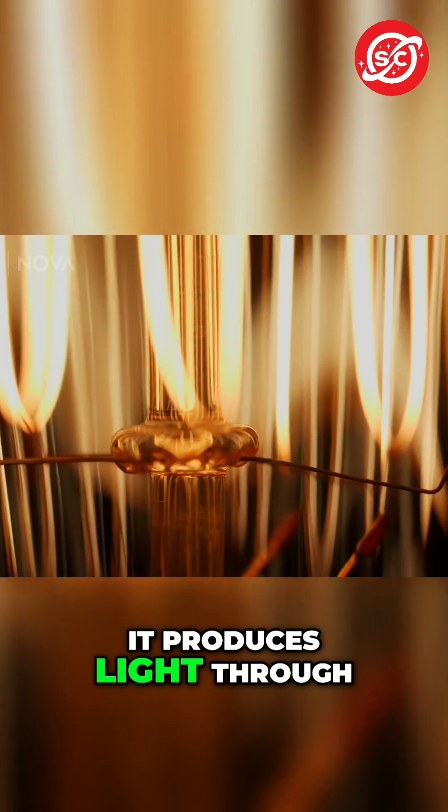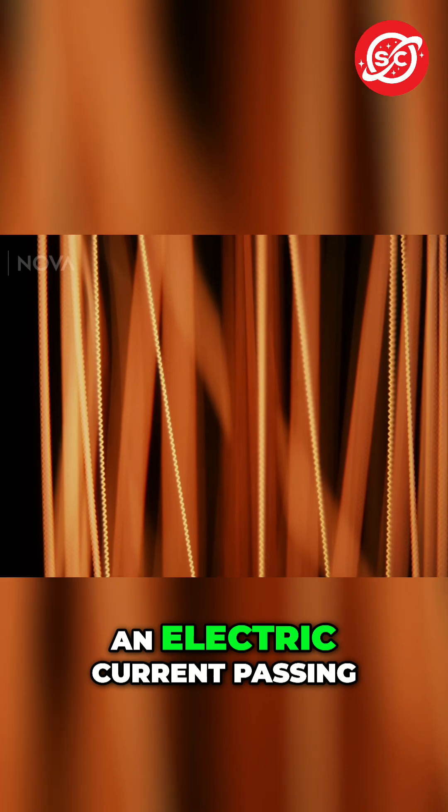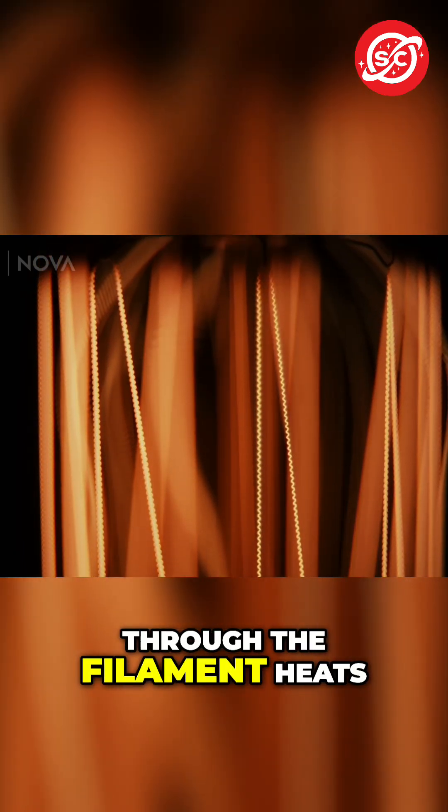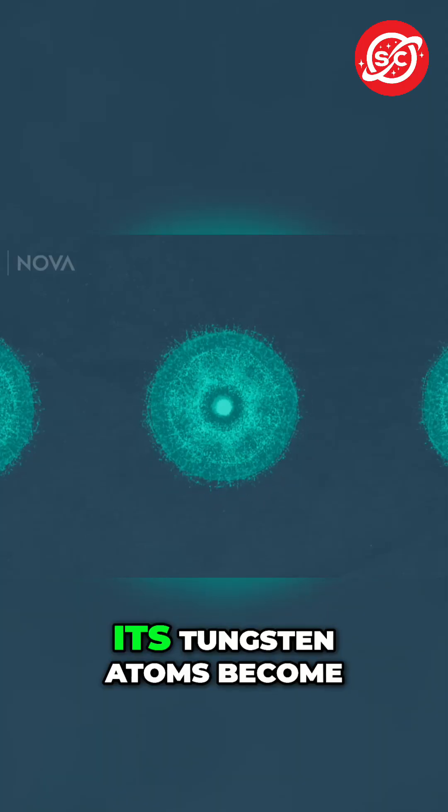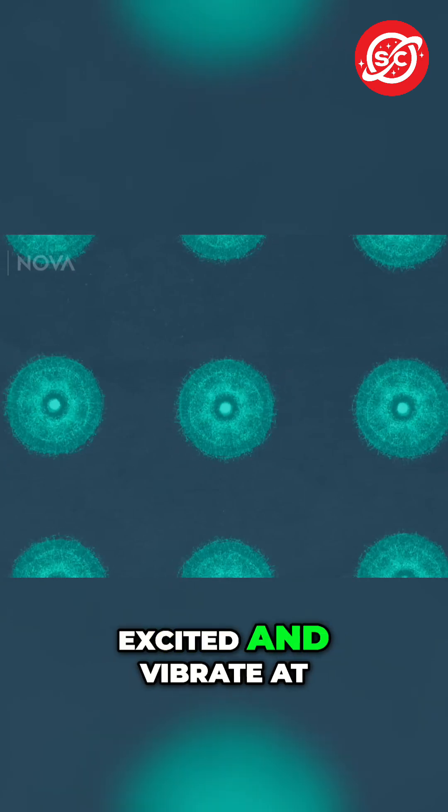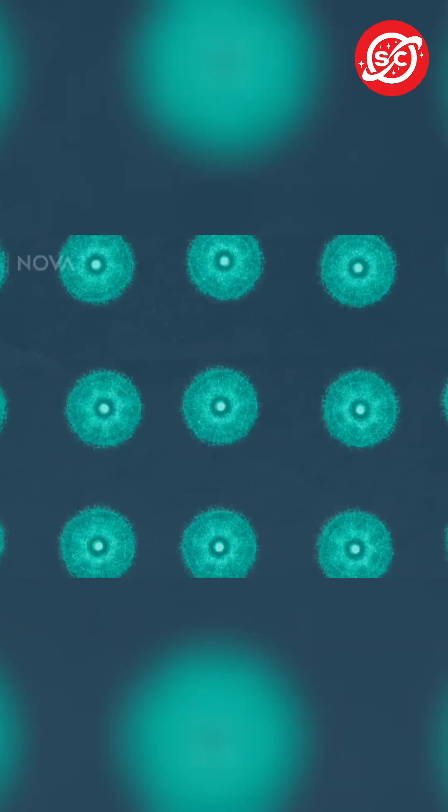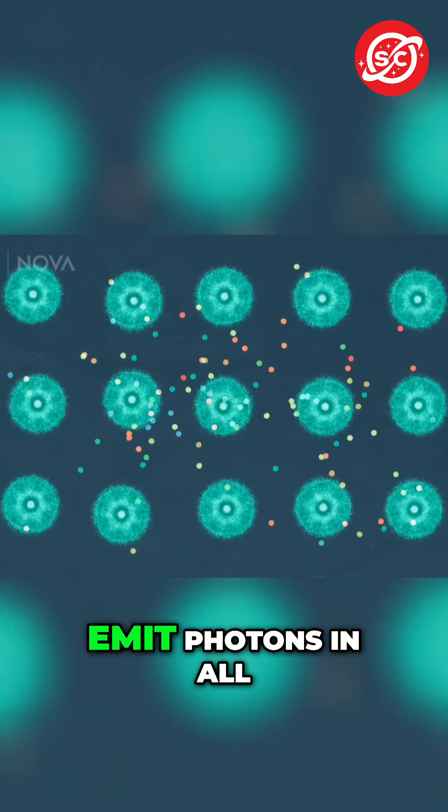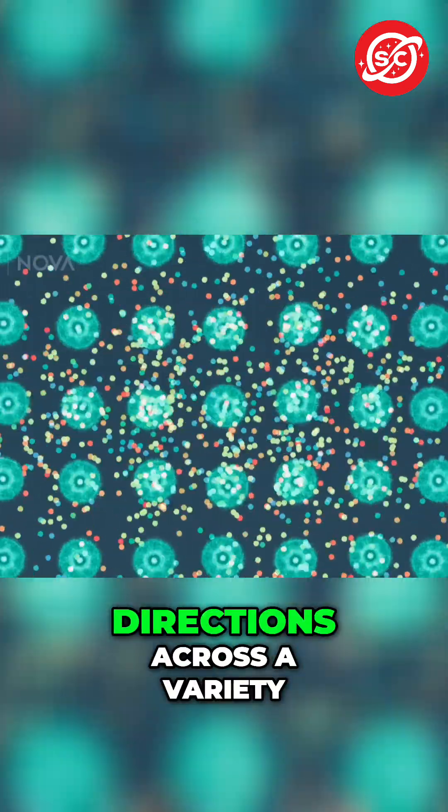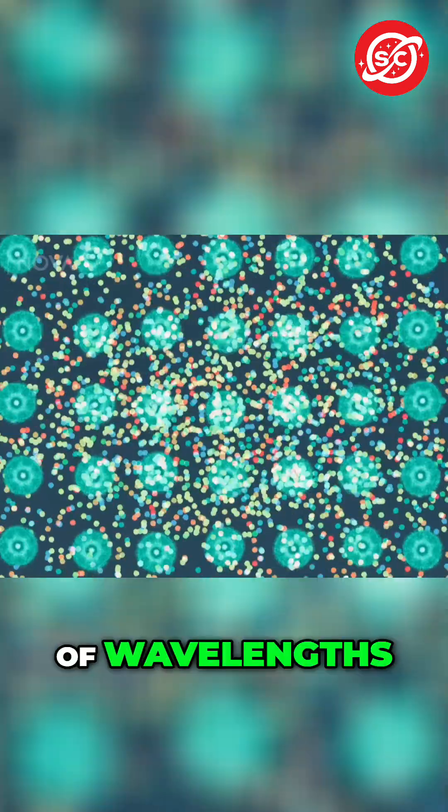It produces light through thermal radiation. An electric current passing through the filament heats it up. Its tungsten atoms become excited and vibrate at different speeds, which causes them to emit photons in all directions, across a variety of wavelengths.